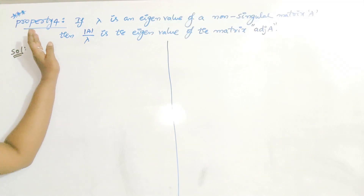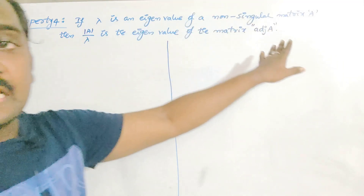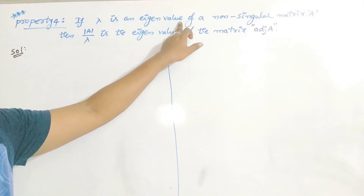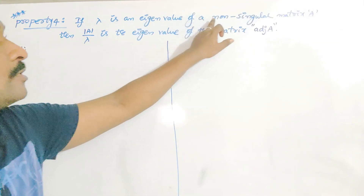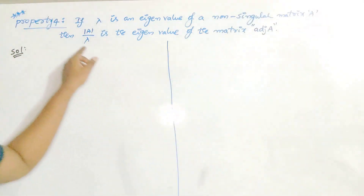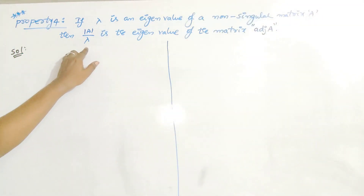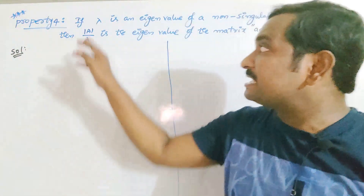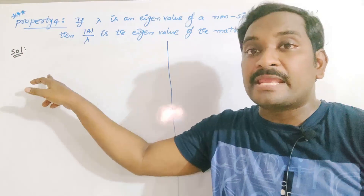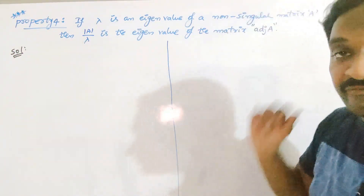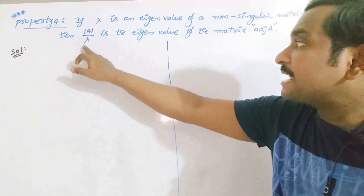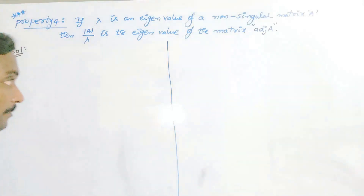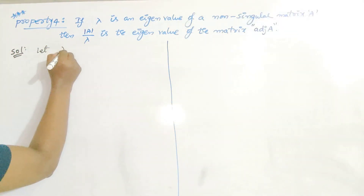This is another property on eigenvalues and eigenvectors. The statement is: if lambda is an eigenvalue of a non-singular matrix A, then det(A) divided by lambda is the eigenvalue of the adjoint of A. The previous property was: if lambda is the eigenvalue of A, then 1 by lambda is the eigenvalue of A inverse. Here, det(A) by lambda becomes the eigenvalue for the adjoint of A.